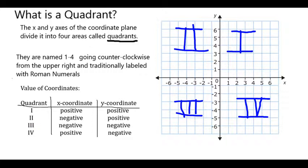So, for example, when you're in the third quadrant, which is down here, both your x and your y-values are going to be negative.